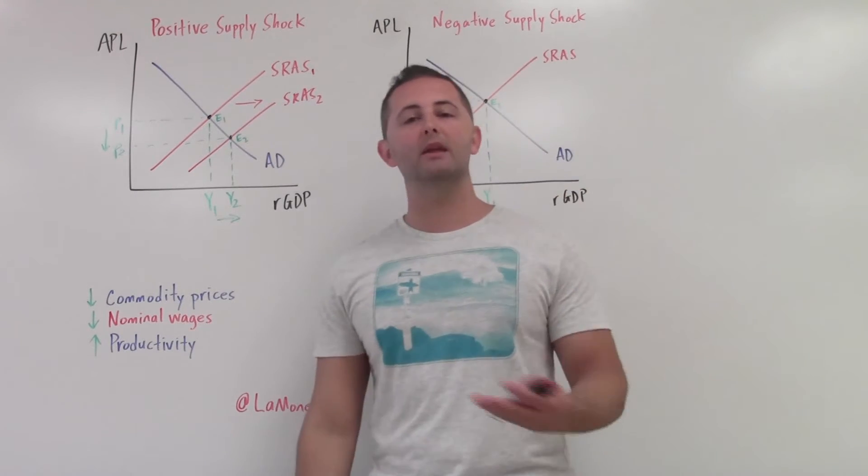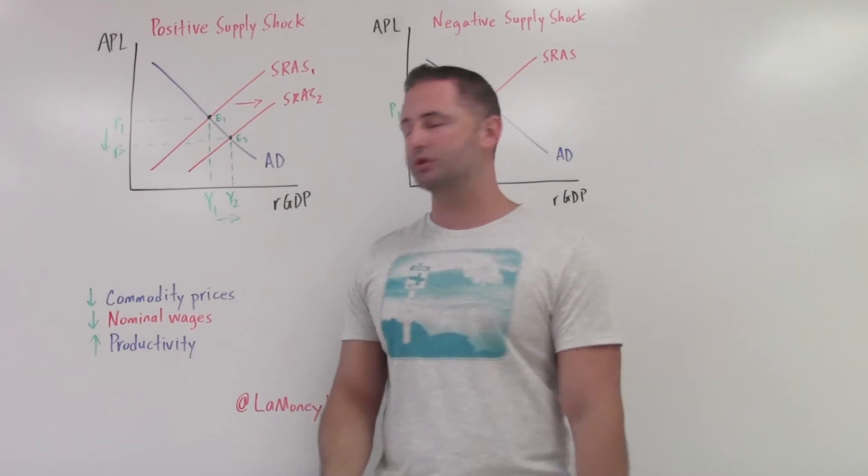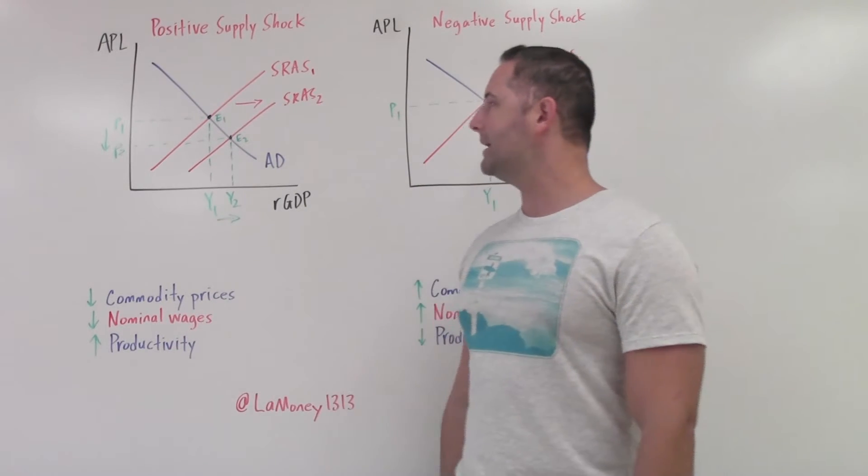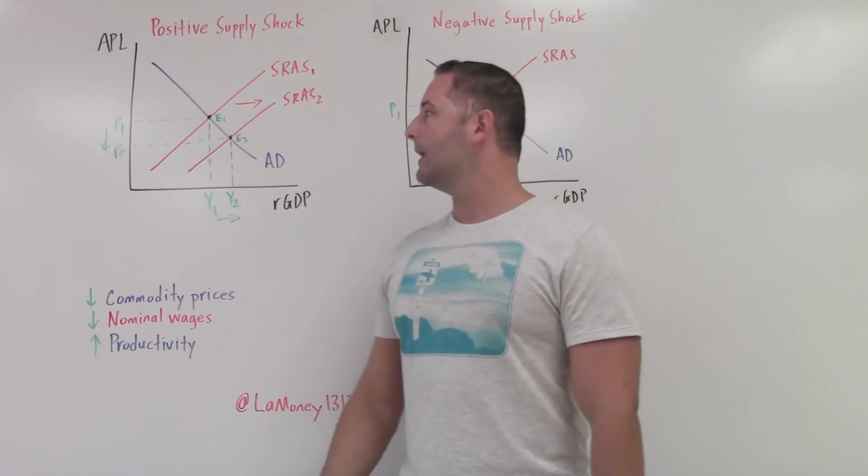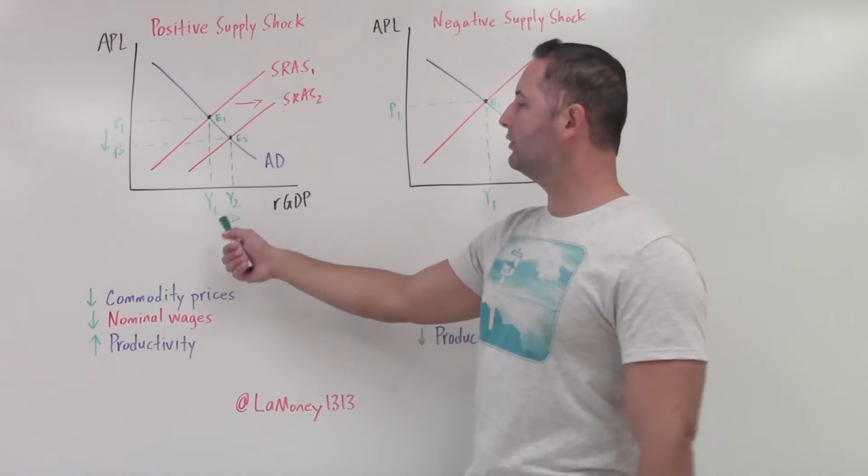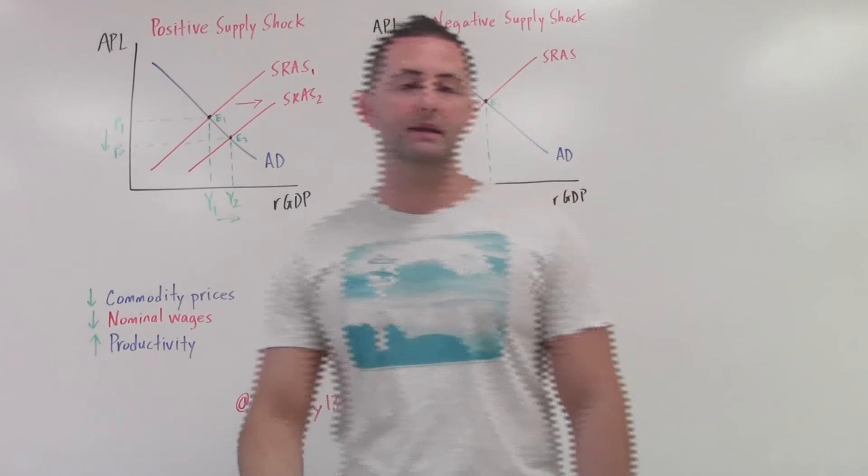Falling nominal wages. Now they can hire more workers because those workers are cheaper. So that will increase the amount that they can output, as will an increase in productivity. So these three things will shift the SRAS curve to the right, leading to higher output and lower prices.